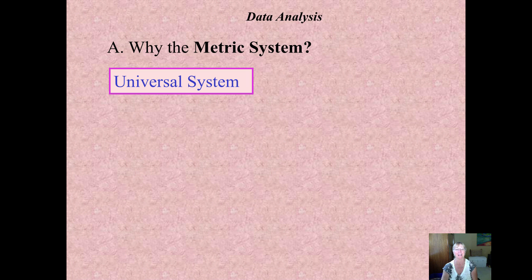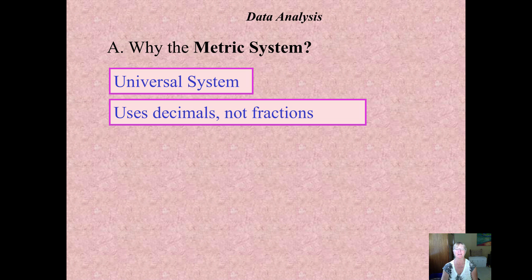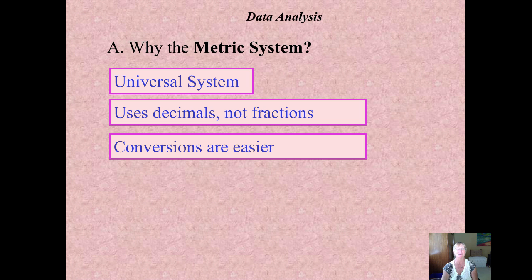Now you can begin to write. It's a universal system. It uses decimals, not fractions. So again, the meter stick comes out to spank your fingers if you're starting to write one-fourth instead of 0.25 in this class this year. Conversions are way easier, as you will see.